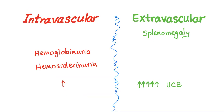So intravascular and extravascular are similar in many ways. What is different and unique: splenomegaly usually goes with extravascular, unconjugated bilirubin usually goes more with extravascular. But what is truly unique is hemoglobinuria and hemosiderinuria — that is uniquely intravascular. If you find them, it is intravascular. I'll see you in the next video where we'll discuss the different causes and conditions of normocytic anemia.